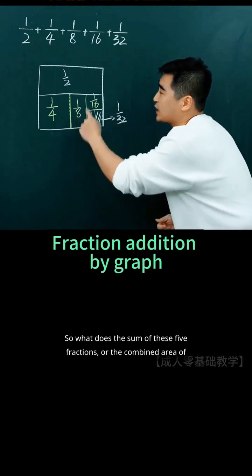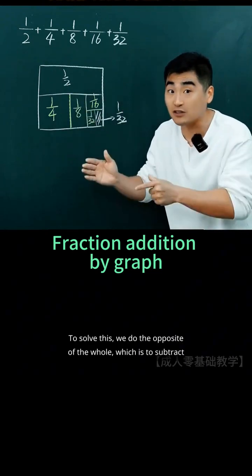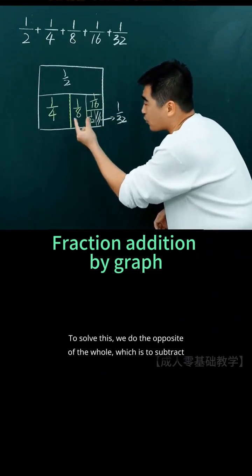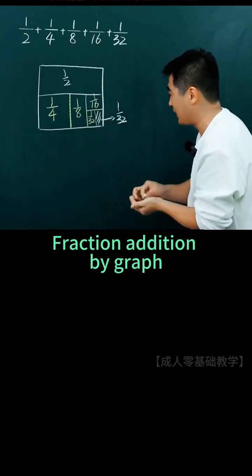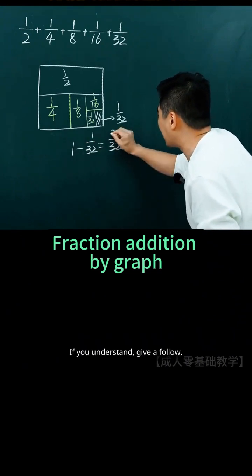What does the sum of these five fractions, or the combined area of these five pieces, equal? To solve this, we do the opposite of the whole, which is to subtract this part. 1 minus 1/32 gives the answer of 31/32. If you understand, give a follow.